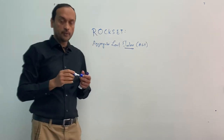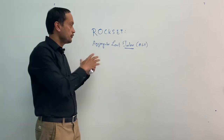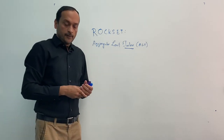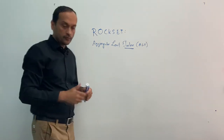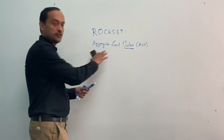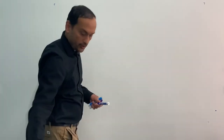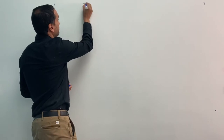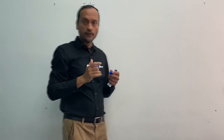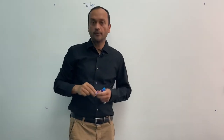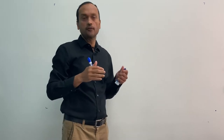So what is unique about Rockset's Tailor, which is the one that does continuous ingest into Rockset? Before we deep dive into the architecture, I'll first write down what are the requirements that we use to design this Tailor. If you look at the Tailor requirements, the primary requirement of the Tailor is that it has to be real-time. Rockset is a real-time analytics database, which means that things need to happen in real-time.